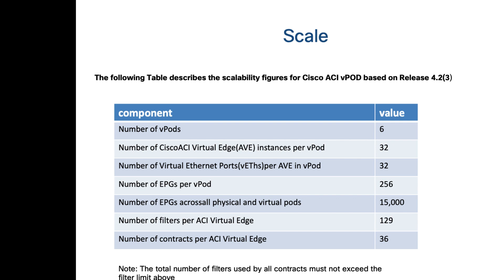A couple more slides to talk about: this is the scale as of 4.2.3. It's always important to look at the scale. This is basically the validated scale — you could probably go higher, it's just not validated. If your deployment needs more than this, just call Cisco, get with your rep, and we can work on validating bigger numbers.